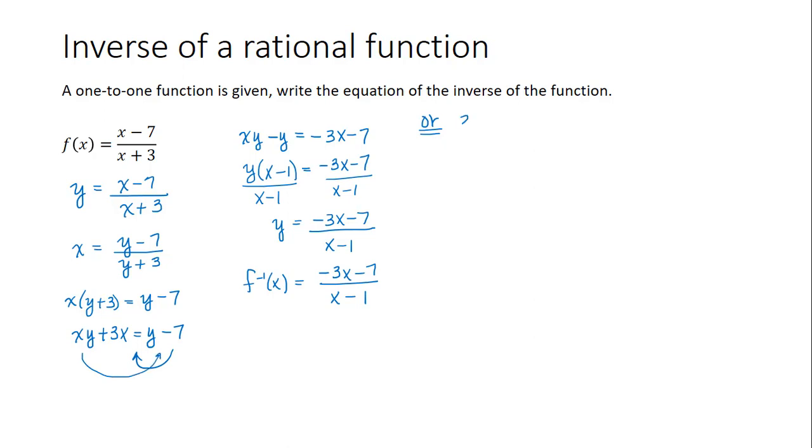So that would give us 3x plus 7 is equal to y minus xy. So we get 3x plus 7 equals, and then we factor the y out from those terms to get y times 1 minus x.